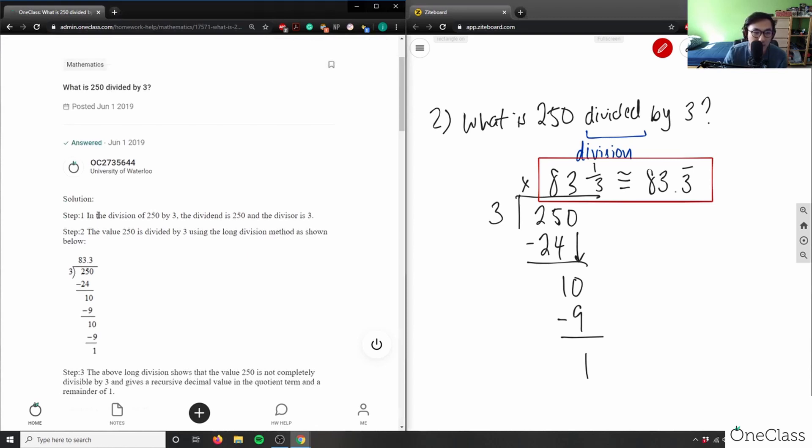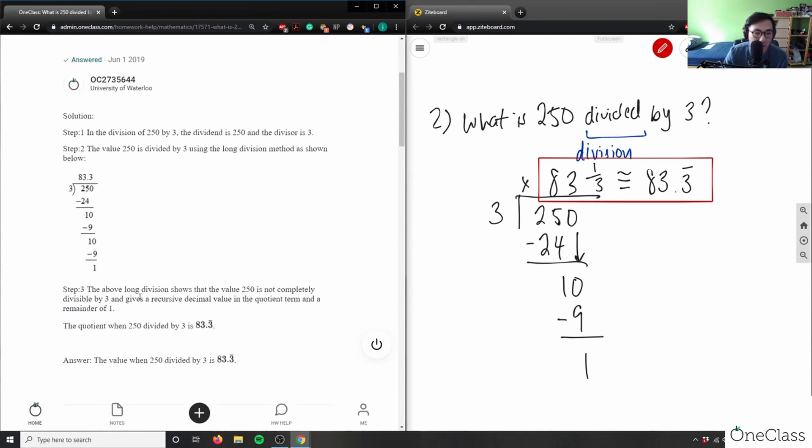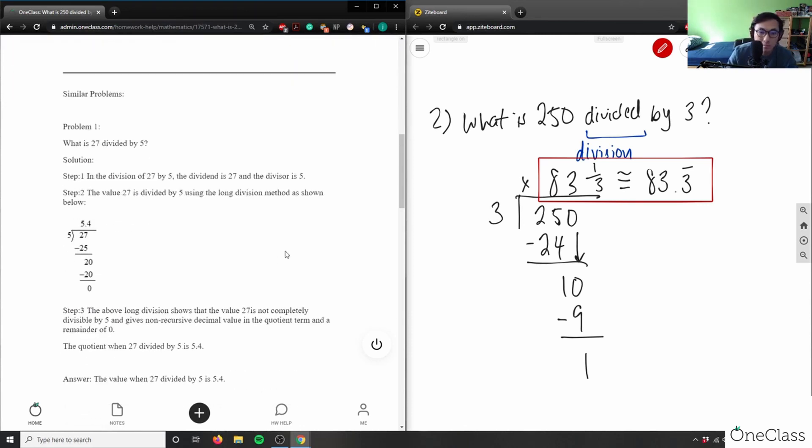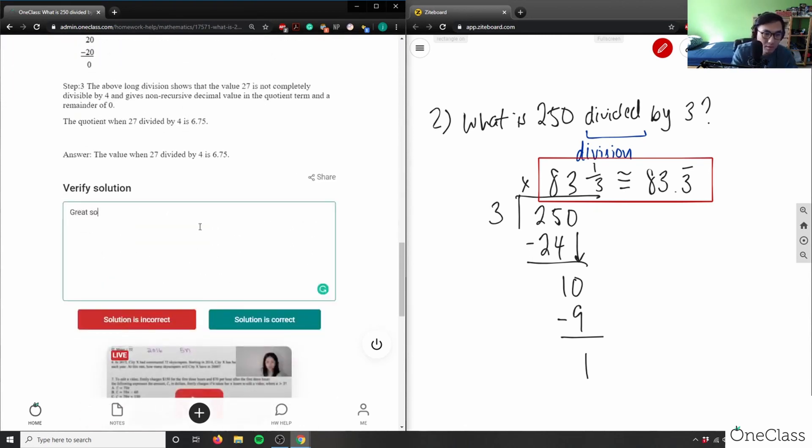I'm going to see what they did here. Yeah, they did long division - they did the exact same thing. The quotient is 83.3 bar or 83 and 1/3. Great solution, correct analysis. Very easy problem.